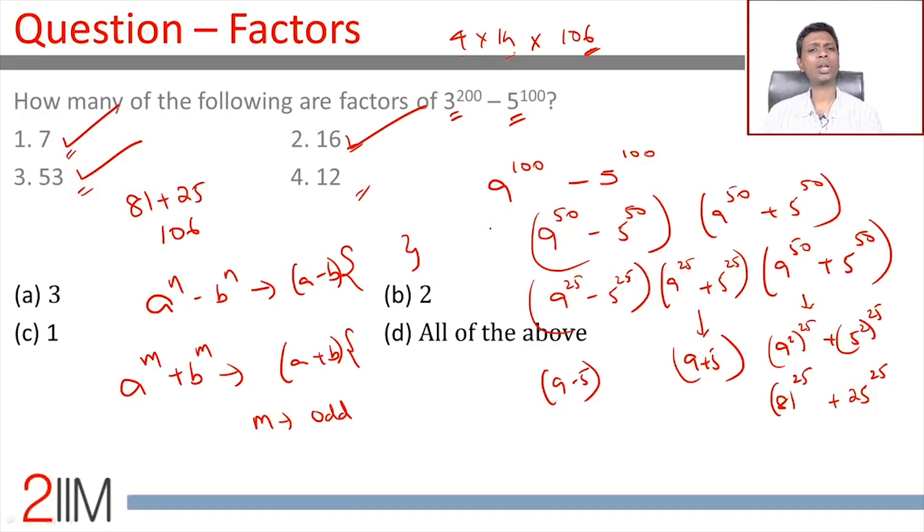But is 12 also a factor? We know that these are all factors. But 12 cannot be extracted from this. But that does not mean 12 is not a factor. For a number to be a multiple of 12, it has to be a multiple of 4 and 3. This number is a multiple of 4. That we know. Is it also a multiple of 3? Of course not. This is a multiple of 3. This is not a multiple of 3. So, from a multiple of 3, we subtract something that is not a multiple of 3. We cannot get a multiple of 3. So, this number will not be a multiple of 3. This doesn't work.